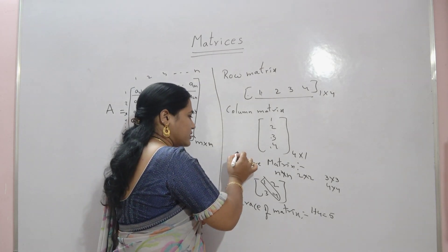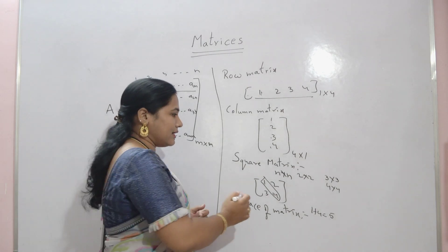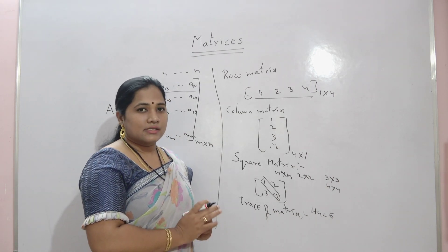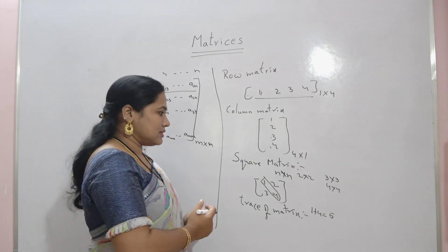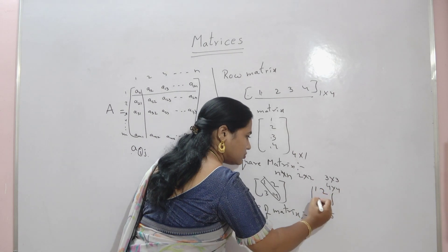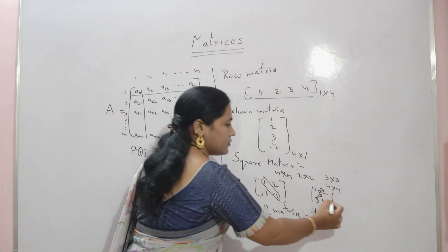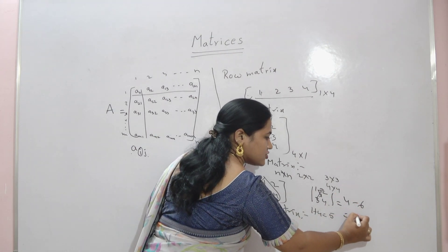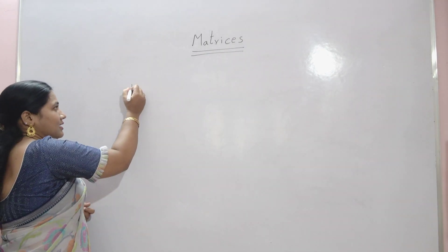Sometimes in questions they may ask whether the given matrix is singular or non-singular. In that case you should know the determinant. If the determinant is 0, then that matrix is called a singular matrix. If the determinant is not 0, then it is a non-singular matrix. The determinant of [1, 2, 3, 4] is found by cross-multiplying: 1 into 4 minus 2 into 3, which gives 4 minus 6, equals minus 2.